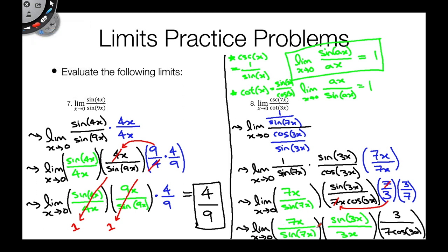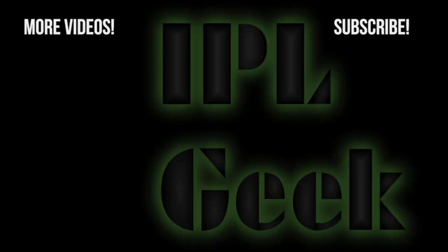Now we just take our limits. We have everything in place: the 7x over sine of 7x goes to 1, sine of 3x over 3x goes to 1, and cosine of 3x also goes to 1 because the limit as x approaches zero of cosine of x is 1. So our final answer is simply 3 over 7. That's the end of this video — congratulations on making it this far! I hope this was helpful and you saw a lot of the limit question types you might encounter. Please like, share, subscribe, leave a comment — I read every comment — and check out some other videos. See you next time!